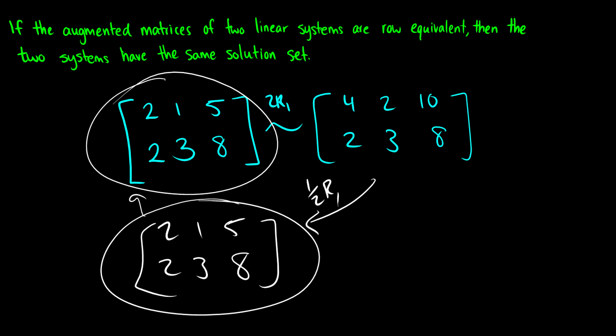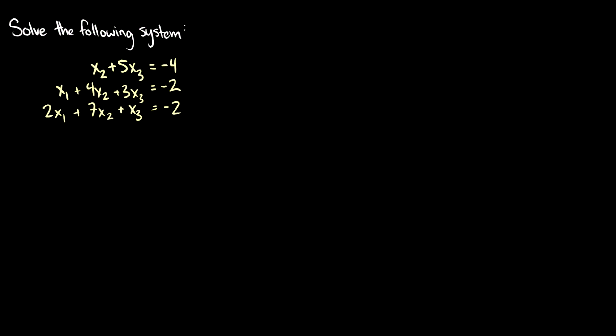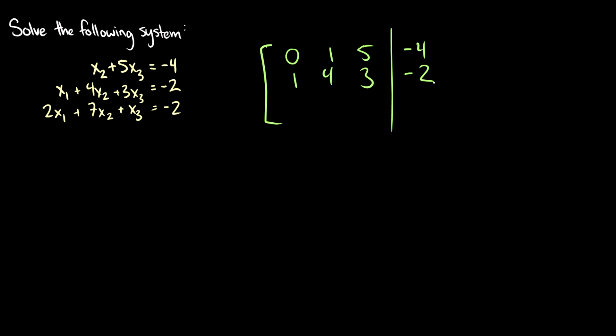Let's solve a system now. We have equations — we don't write those out anymore, we use matrices. Encoding: first line has 0x1, 1x2, 5x3 equals negative 4. Second row: 1x1, 4x2, 3x3 equals negative 2. Last row: 2x1, 7x2, 1x3 equals negative 2.